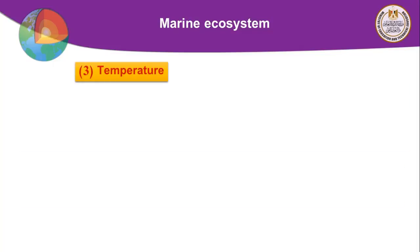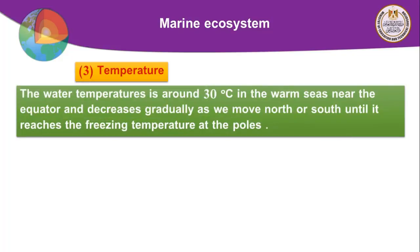The third factor is temperature. Water temperature varies — it is about 30 degrees Celsius in warm seas near the equatorial line, but decreases gradually as we move north or south, reaching freezing temperatures at the two poles. The temperature of seawater is not constant but varies according to different seasons and regions.